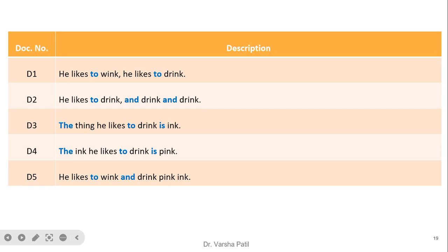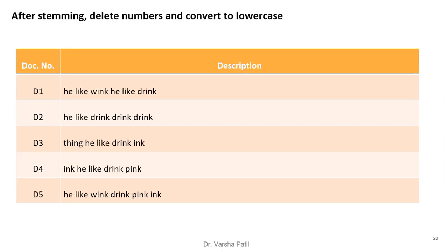After stemming, delete numbers and convert to lowercase. These are the final logical forms of the documents on which we will perform the inverted file indexing. For example, the first document is 'he like wink, he like drink', with 'he' in lowercase. We find the vocabulary and occurrences, always maintained in ascending order.